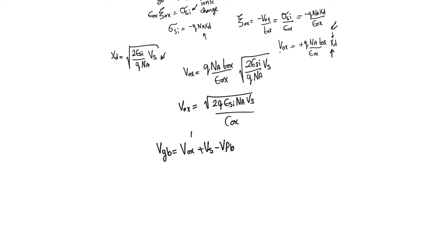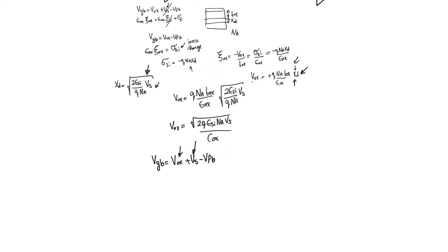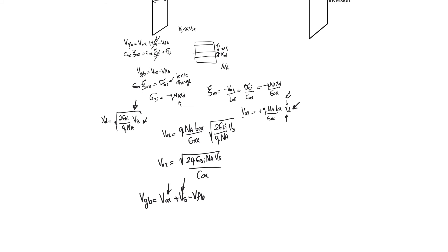This still doesn't give us the value of XD directly, but XD can be obtained by going back to the equation for Vgb: Vgb equals V_oxide plus V_surface minus V_flatband. We have an expression for V_oxide in terms of XD (linear), and an expression for VS in terms of XD (quadratic). Substituting both and knowing Vgb, we can solve for XD. This tells us that the more Vgb we apply, the deeper the depletion region, since XD increases with increasing Vgb.